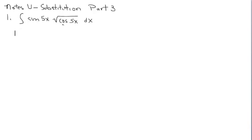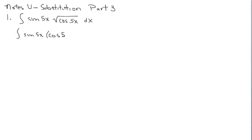For this particular example, it's pretty complicated. I have a sine and a cosine, and the cosine is underneath the square root. So the first thing I'm going to do is get rid of the radical by rewriting it with a rational exponent. So it's sine of 5x times the quantity cosine(5x) to the 1/2.